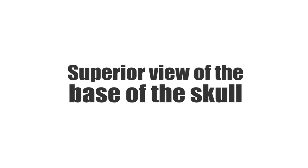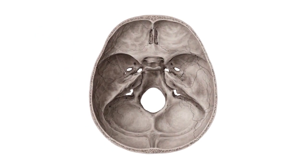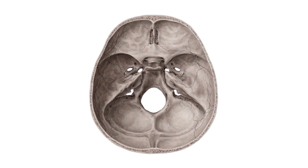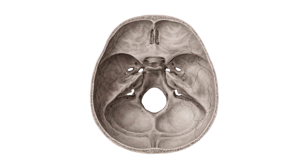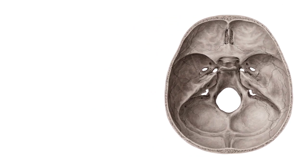What I'm going to be doing in this tutorial is looking at the superior view of the skull, as you can see here on the image on the screen. We're going to be describing the different structures that you can see from this view. I'm going to quickly list them before we move on and talk about them in a little bit more detail.